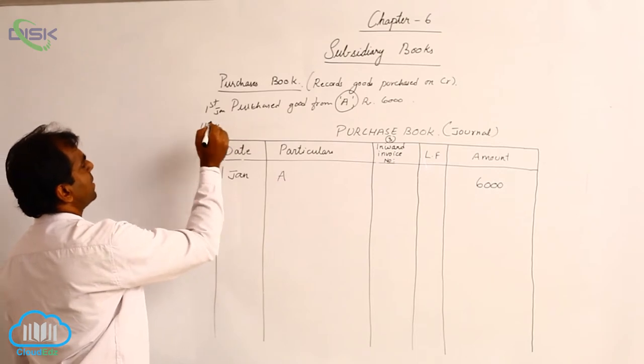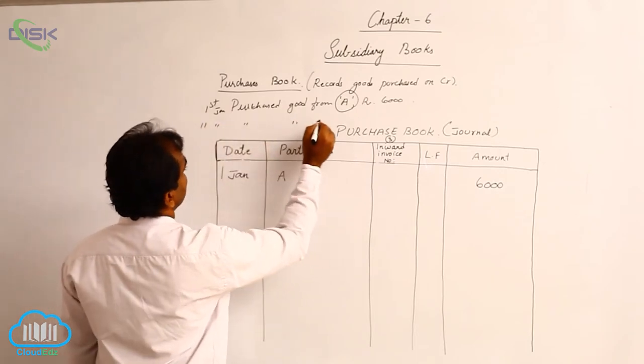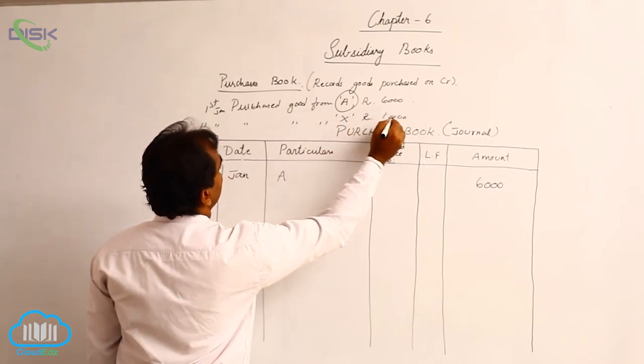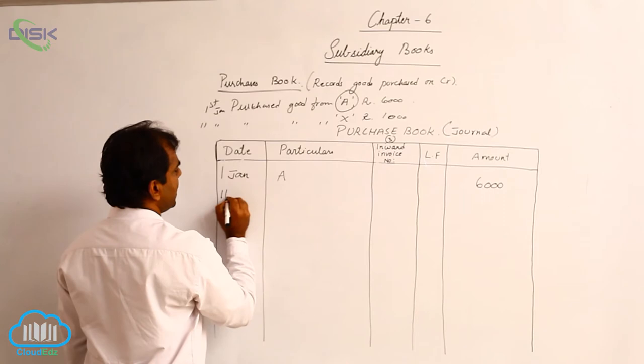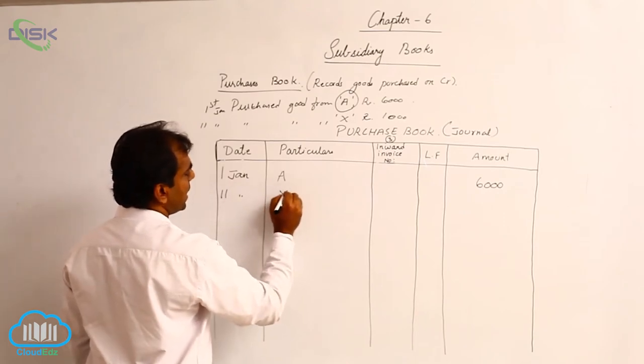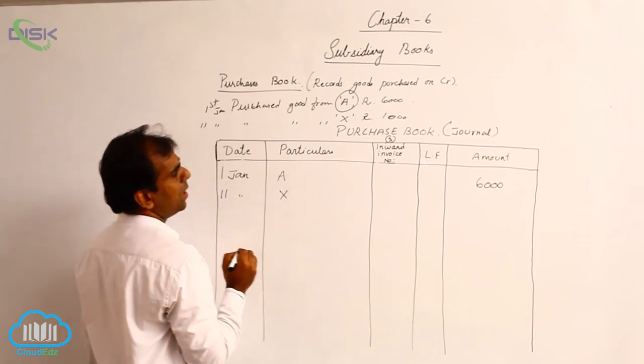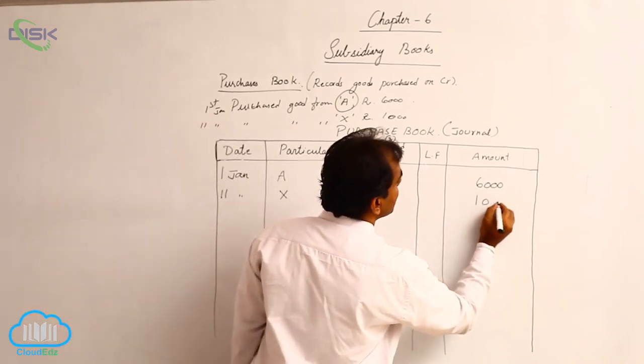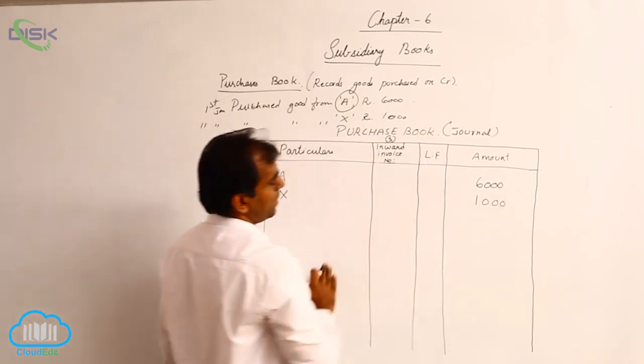Suppose another transaction, purchased goods from X for Rs. 1000. So what I have to do? Give the date 11th January. Simply write name of X in the particulars column and enter the amount in amount column. So this is how we prepare purchase books.